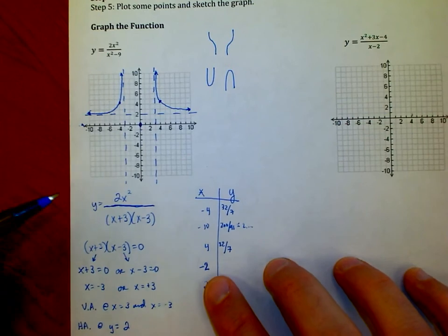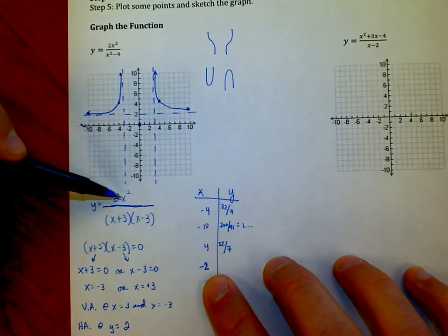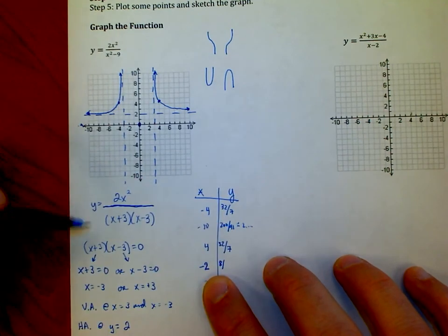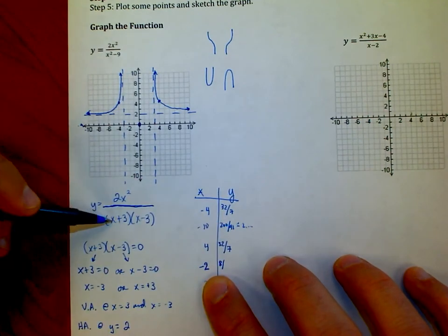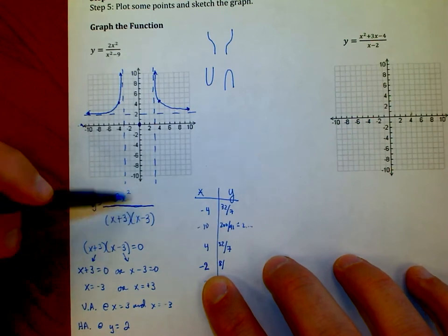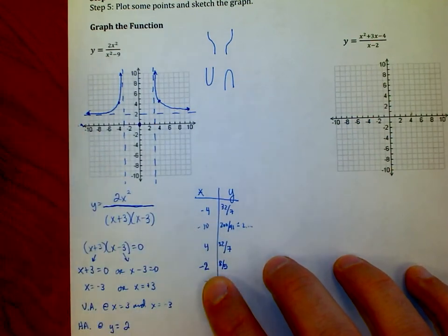If I put in a negative 2, negative 2 squared is positive 4. Positive 4 times 2 is 8. Negative 2 plus 3 is negative 1. Negative 2 minus 3 is negative 5. Negative 1 times negative 5 is positive 5.